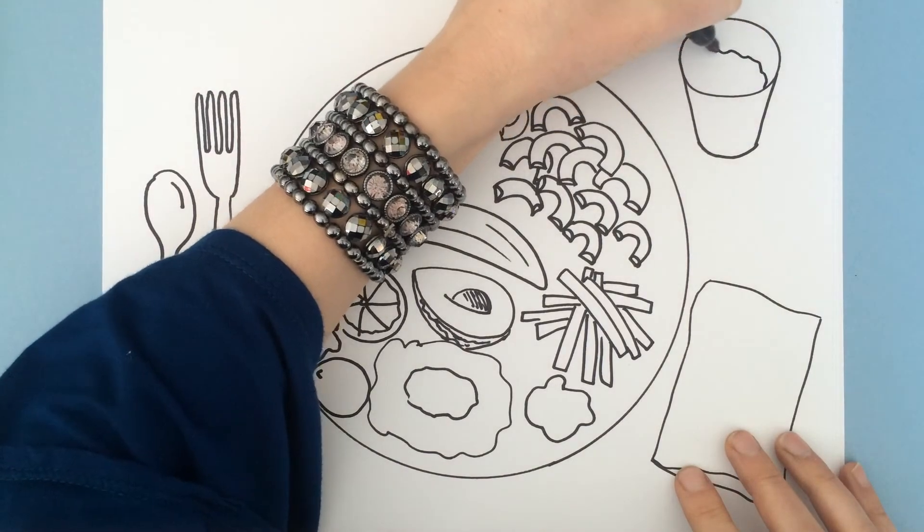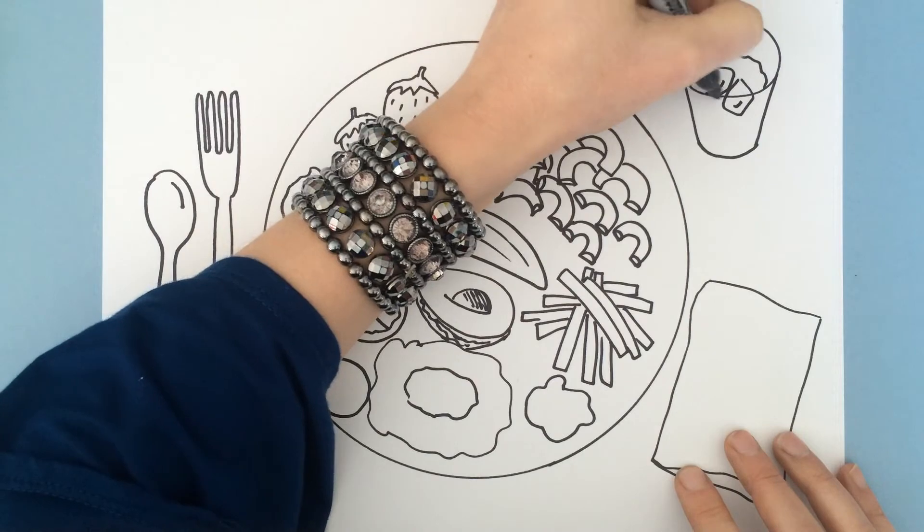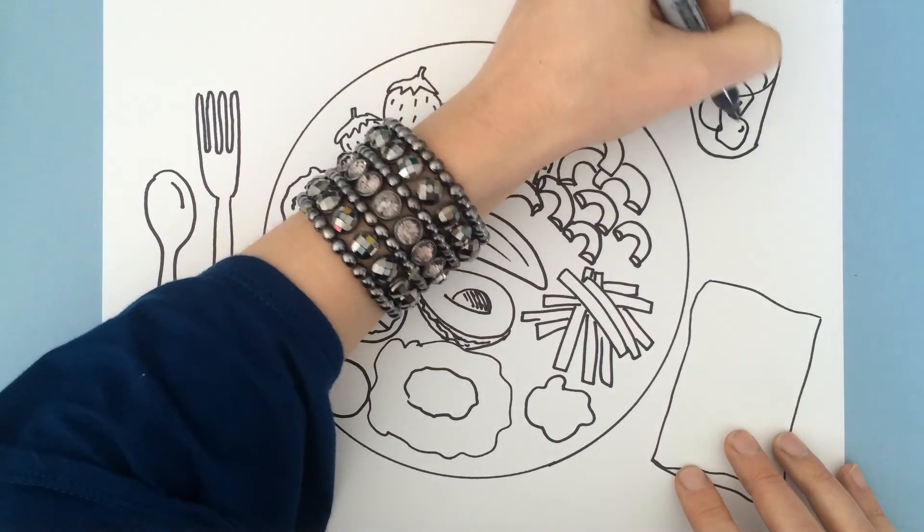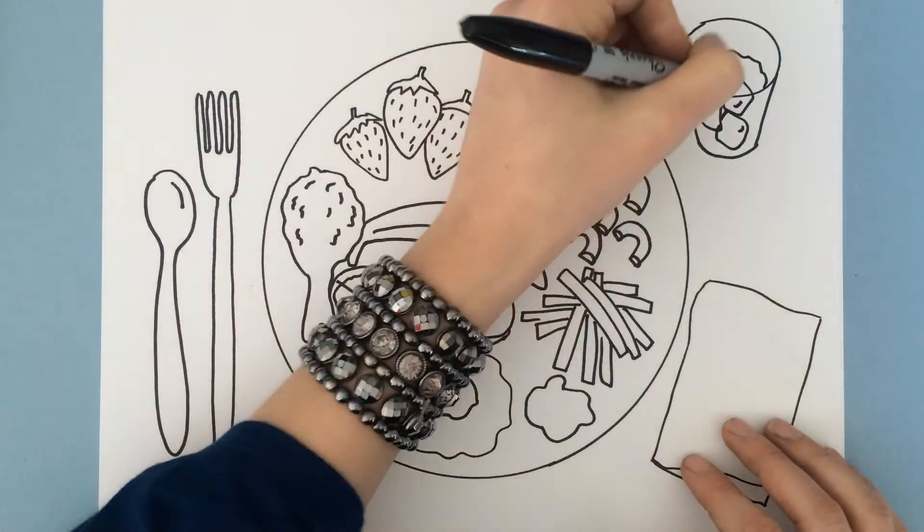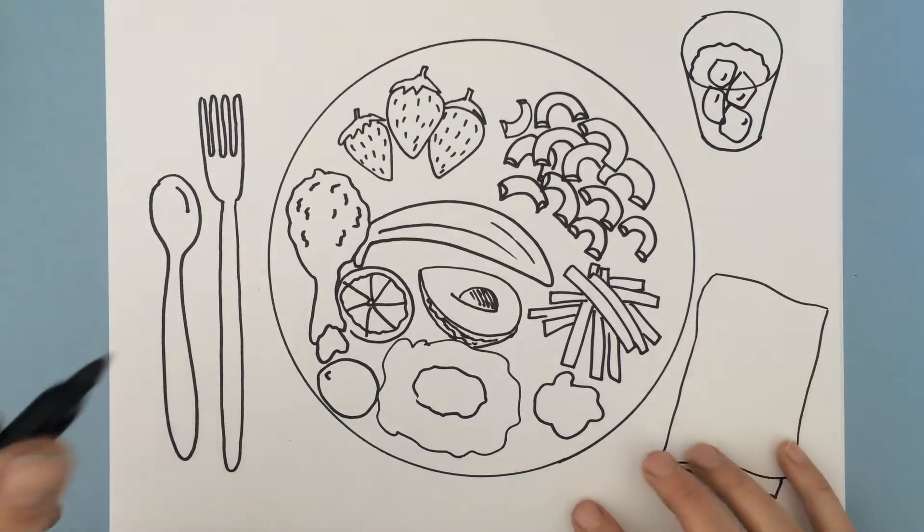I need some drink over here. So Ms. Raven's gonna put a wavy line for some drink. And I love ice in my drink. So it's nice and cold. And my favorite drink is sweet tea. So I can color that in like it's the color of sweet tea. I think my plate looks pretty good.